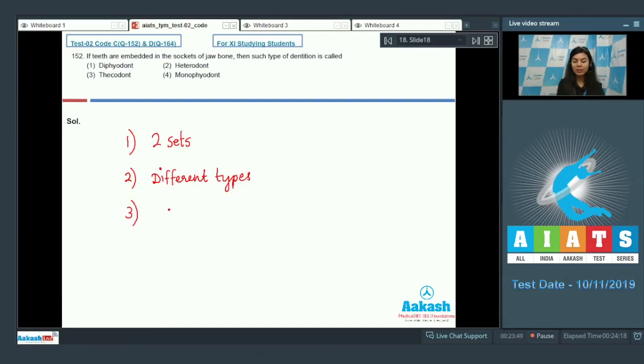Option number three, thecodont, means when the teeth are embedded into the jawbone or jaw sockets. And monophyodont means there's only one set of those teeth. The right answer here would be option number three, thecodont.